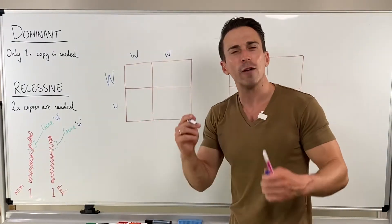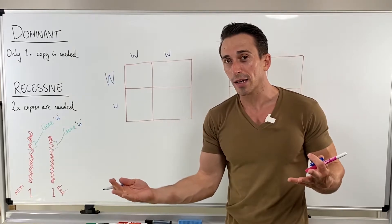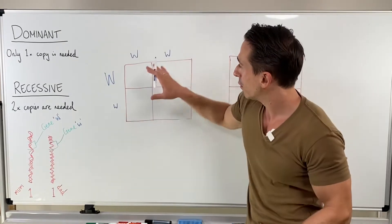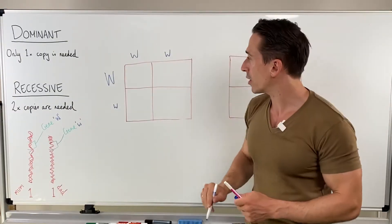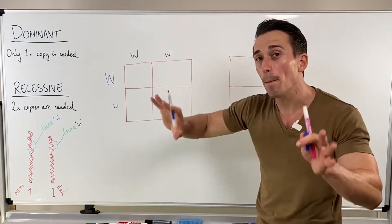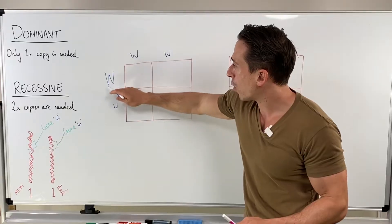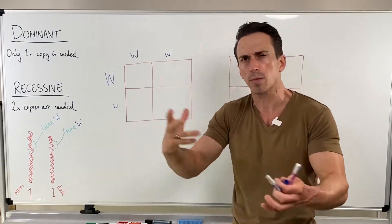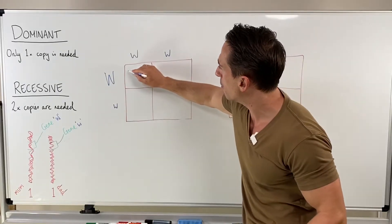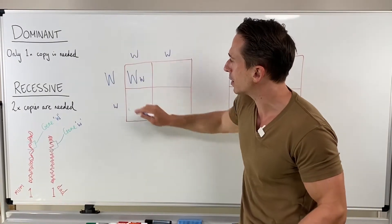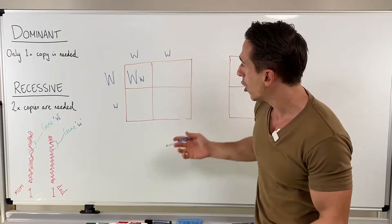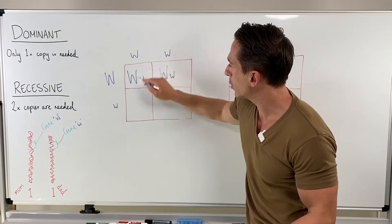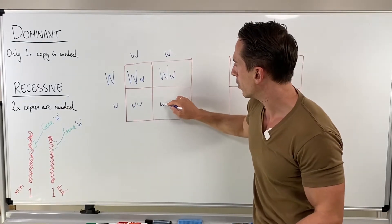There you go. So if we were to produce offspring, what would be the possible outcomes for genotype for the offspring? Well, we could have a combination of my wife's, because again, remember they get one chromosome from me and one chromosome from my wife. So what's the possible combinations? They could get the big W and little w, big W from my wife, little w from me, or big W, little w again, or little w, little w, or little w, little w.